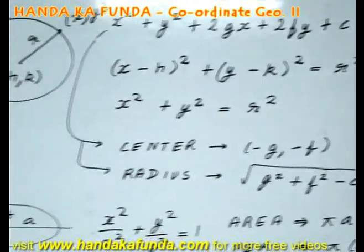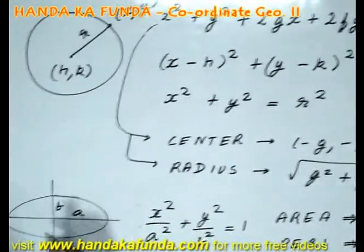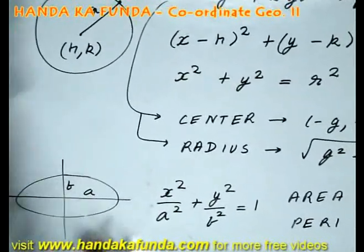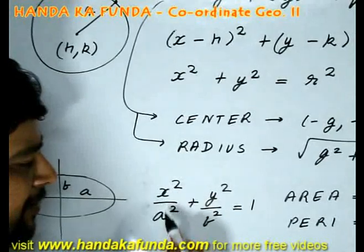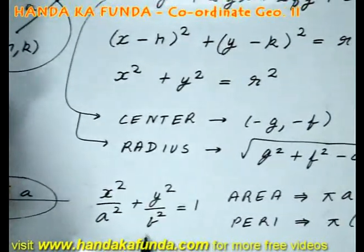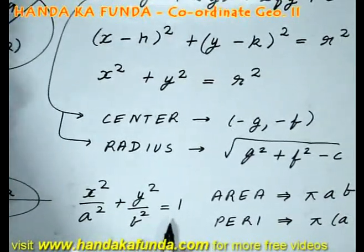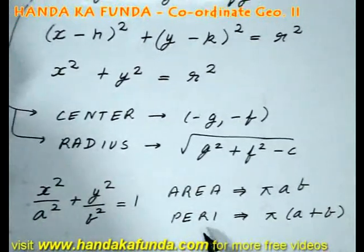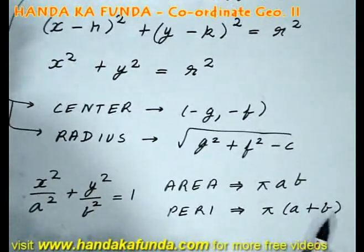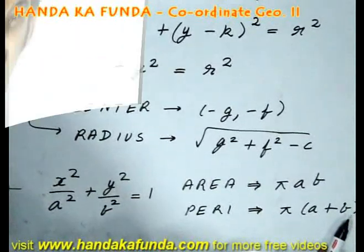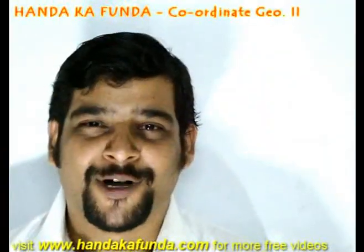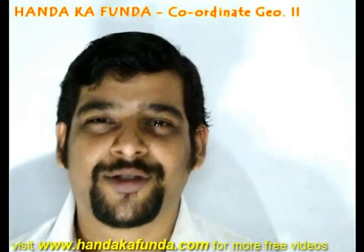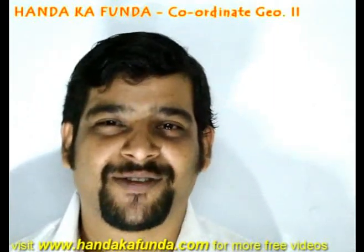If I am looking at an ellipse and the semi-major axis is a and the semi-minor axis is b, then the equation of the ellipse is given by x² divided by a² plus y² divided by b² is equal to 1. The area is pi·ab and the perimeter is pi times a plus b. That wraps up the session on coordinate geometry. Please stay tuned at Handa Ka Funda to watch other videos on other chapters. Thank you.